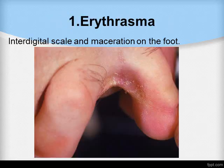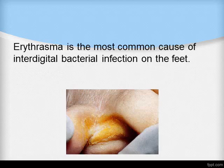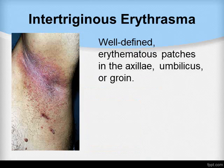Erythrasma shows interdigital scale and maceration on the foot. It is a superficial bacterial infection of the skin caused by Corynebacterium minutissimum, a gram-positive non-spore-forming bacillus, and is the most common cause of interdigital bacterial infection on the feet. Erythrasma can also occur in intertriginous areas like the axilla, umbilicus, or groin.